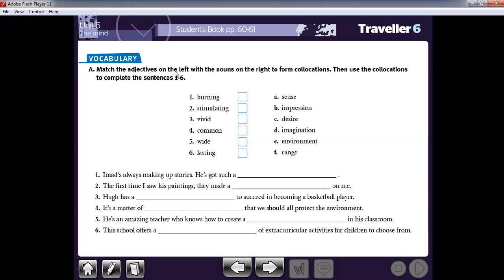Now let's have more practice on collocations. Match the adjectives on the left with nouns on the right to form collocations. Then use the collocations to complete the sentences from one to six. I think you know it's very easy to form these collocations. Now burning desire. Stimulating environment. Vivid imagination. Common sense. Wide range. And lasting impression.